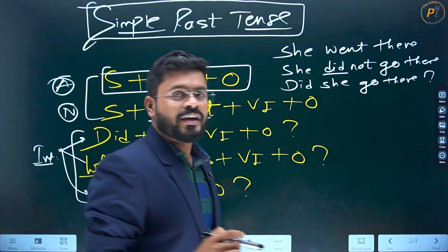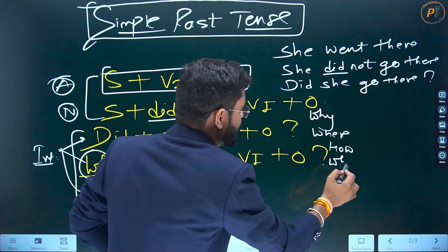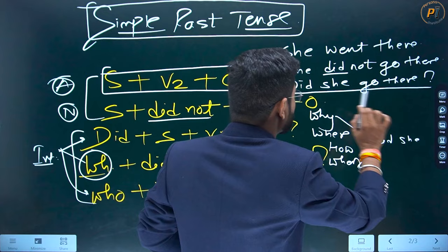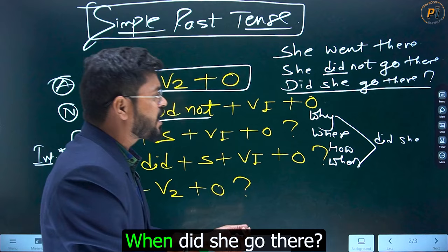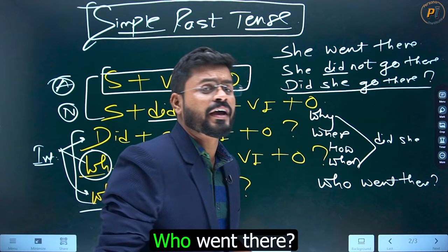Ab next — aapka WH-word. WH-word mein why, where, how, when — jo bhi WH-word aap lagana chahte ho, jisme bhi aap comfortable hain, usko use karo: Why did she go there? Where did she go? How did she go there? When did she go there? Or bhi kaafi sare WH-words hain. And in the last — koon wahaan gayi? Who went there? Koon yahan aaya? Who came here? Kisne khidki todi? Who broke this window?